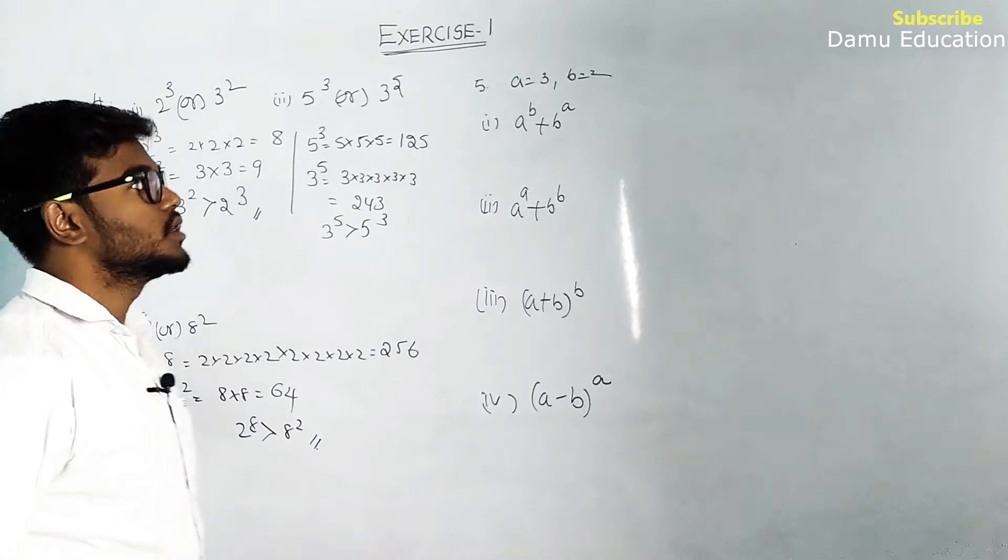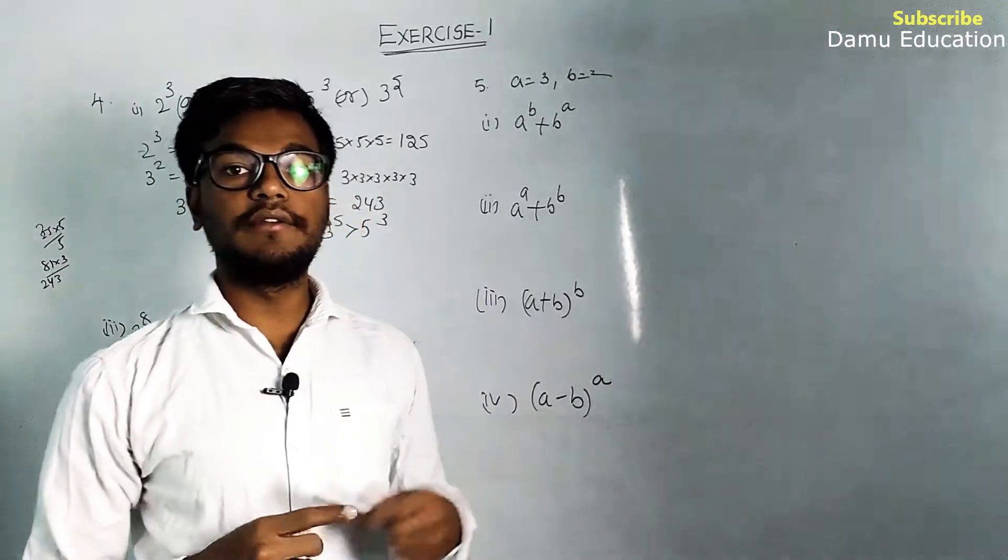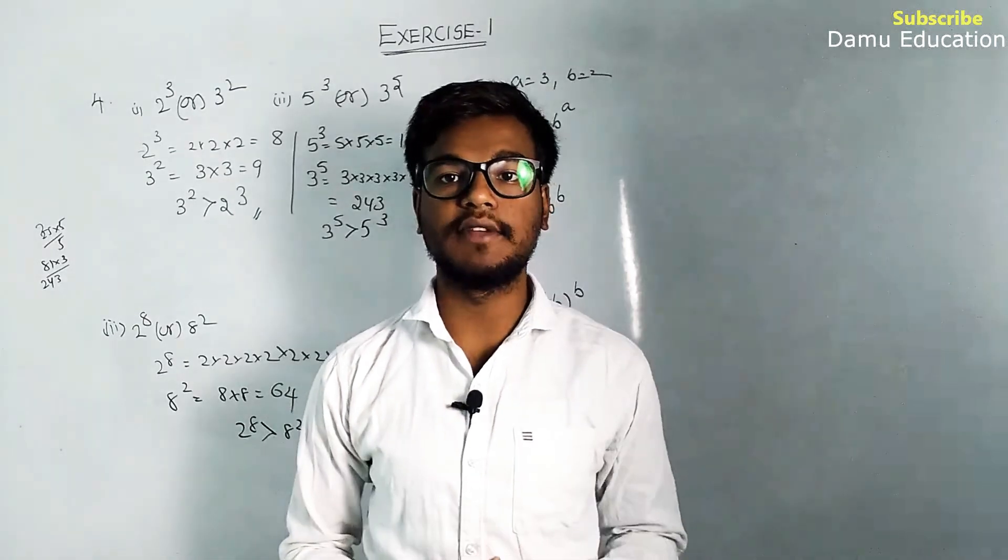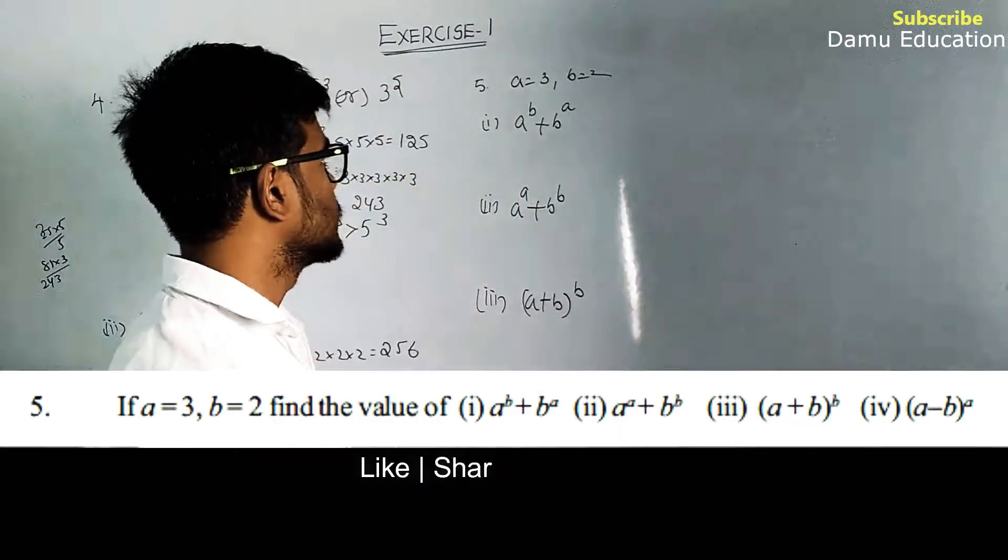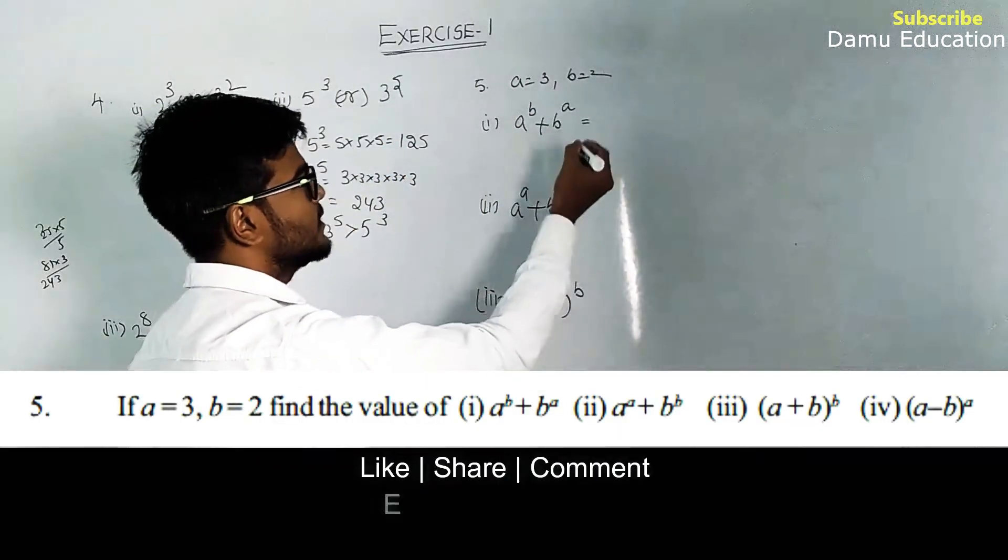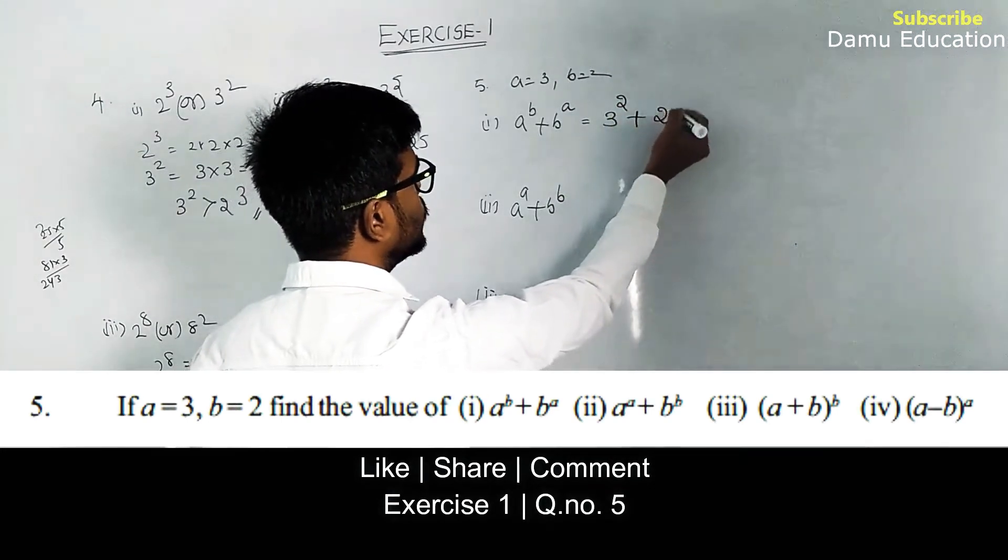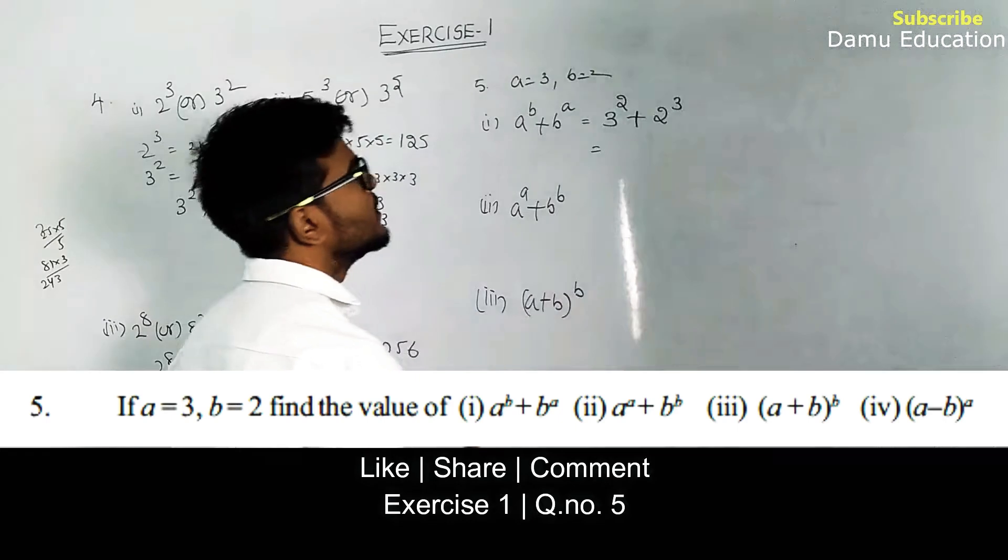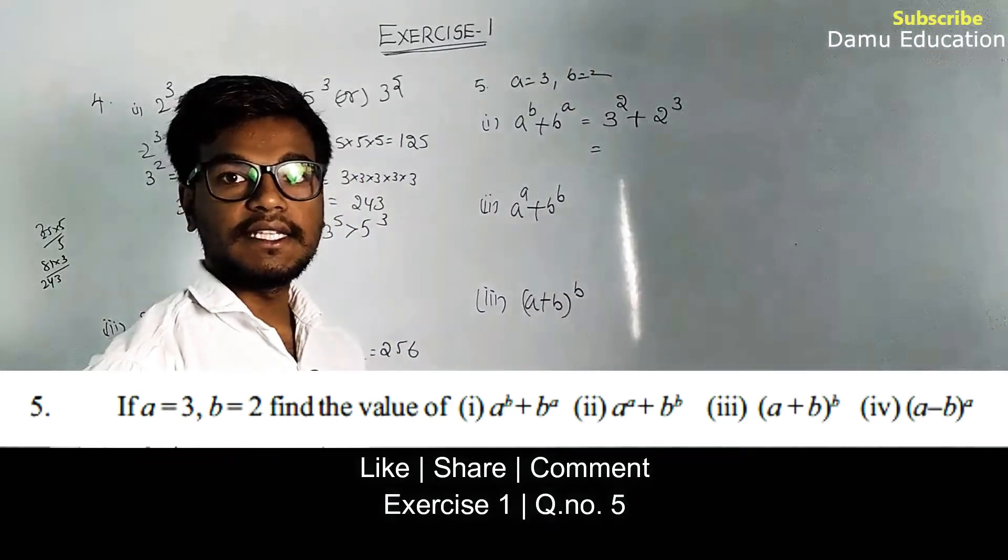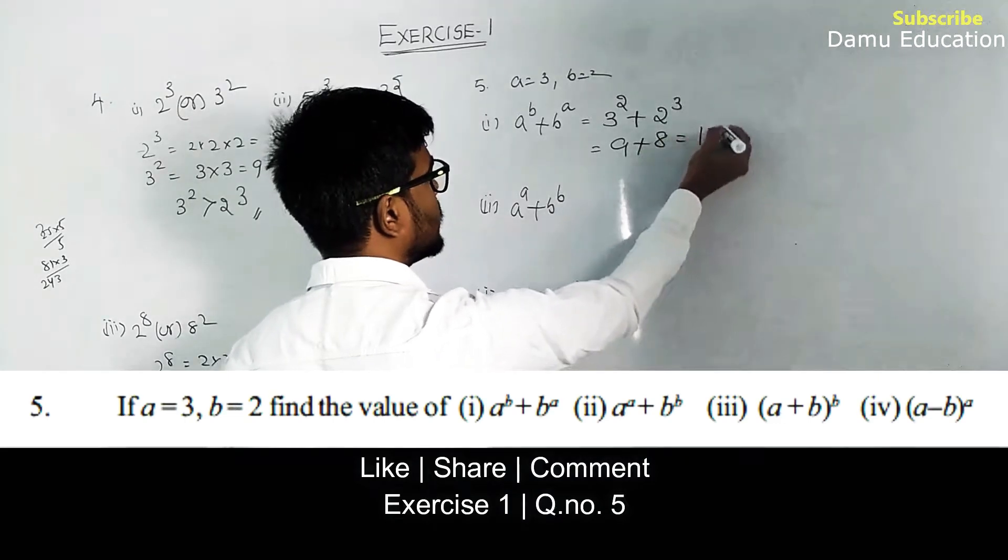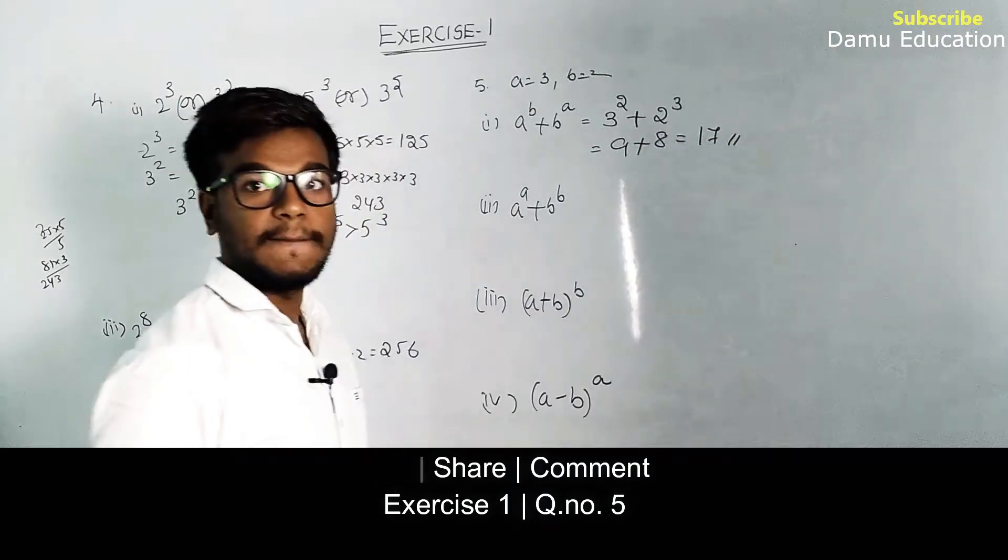Next, in the fifth question we have to substitute the a and b values. Part (i): a² + b³ where a = 3, b = 2. So 3² is 9, 2³ is 8, that equals 17.